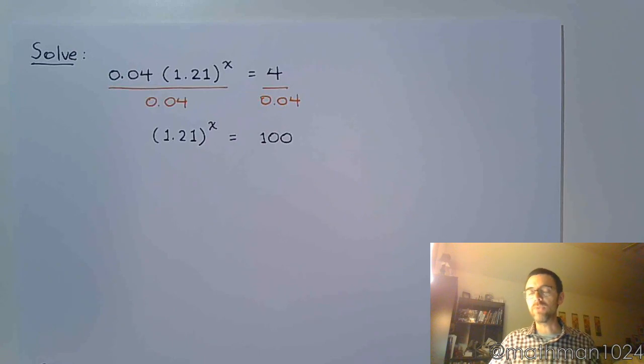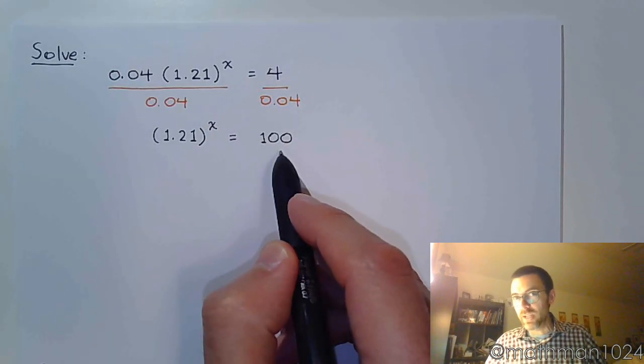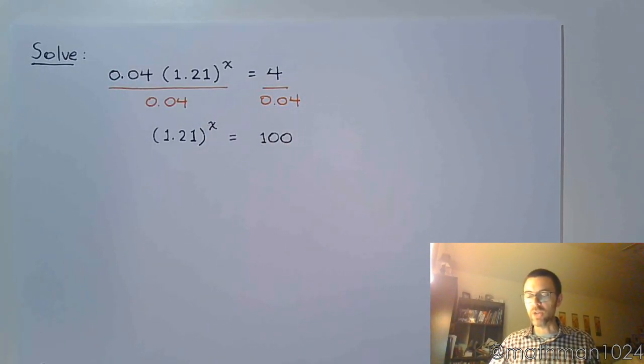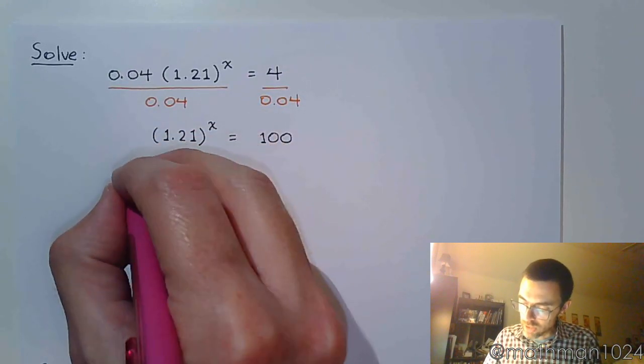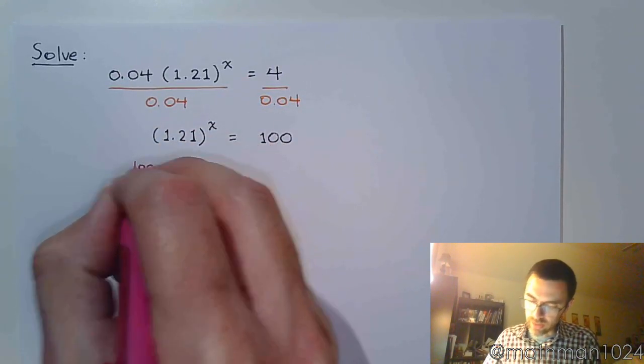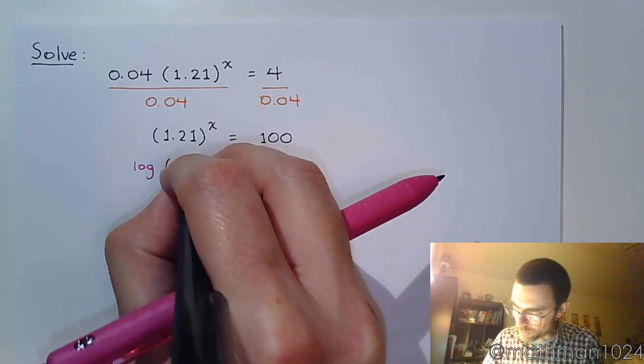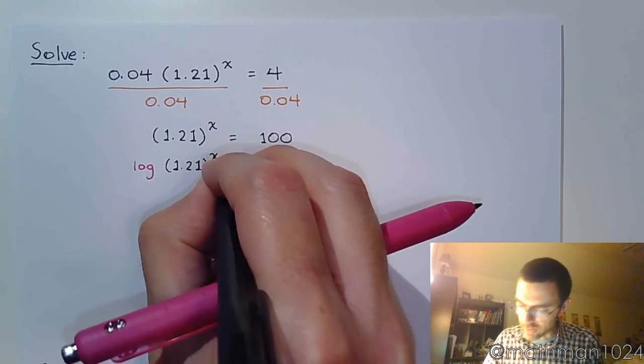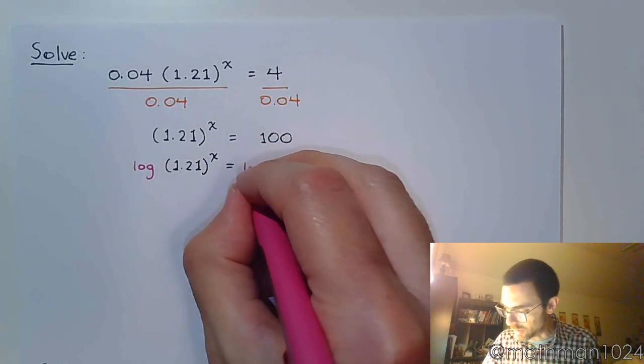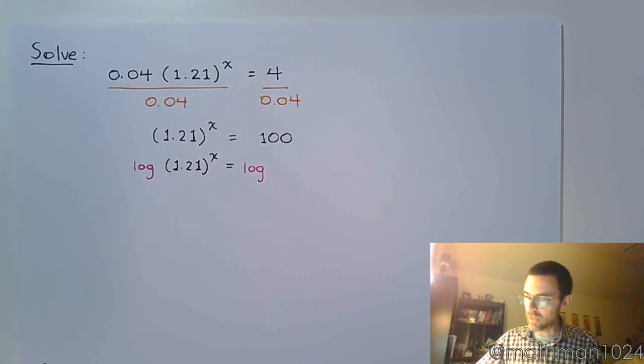Now in the past I was saying it didn't matter if you used natural log or common log. But here I would actually use the common log because 100 is the power of 10. And the common log deals in powers of 10. So I'm going to say log, common log, 1.21 to the x is equal to the common log of 100.